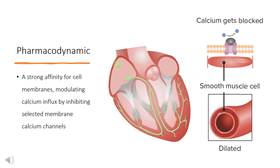Diltiazem exerts hemodynamic actions by reducing blood pressure, systemic vascular resistance, the rate pressure product, and coronary vascular resistance while increasing coronary blood flow. Diltiazem decreases sinoatrial and atrioventricular conduction in isolated tissues and has a negative inotropic effect in isolated preparations. In supraventricular tachycardia, diltiazem prolongs AV nodal refractoriness.